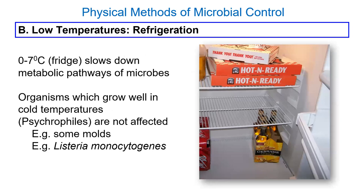Refrigerators don't really kill anything — they just slow microbial growth to a crawl. This is why we refrigerate food: bacteria, mold, and fungi are going to grow eventually. Hopefully you eat things within the expected range. Some things might still grow — molds on cheese, listeria on lunch meats. Refrigeration is not going to sterilize or disinfect; it's just going to slow things down and preserve them for the time being.